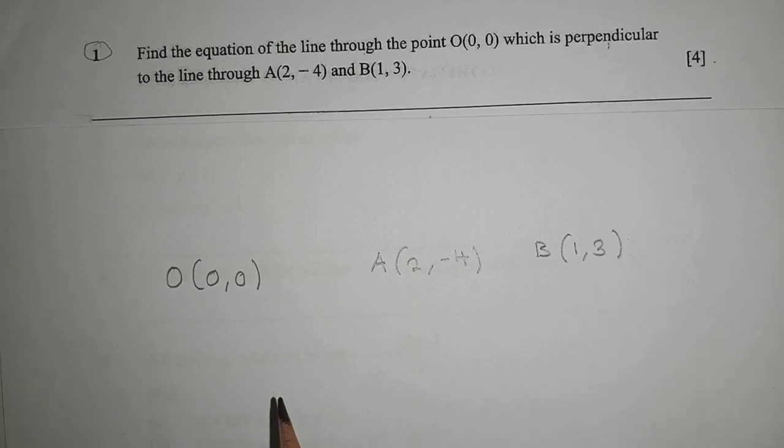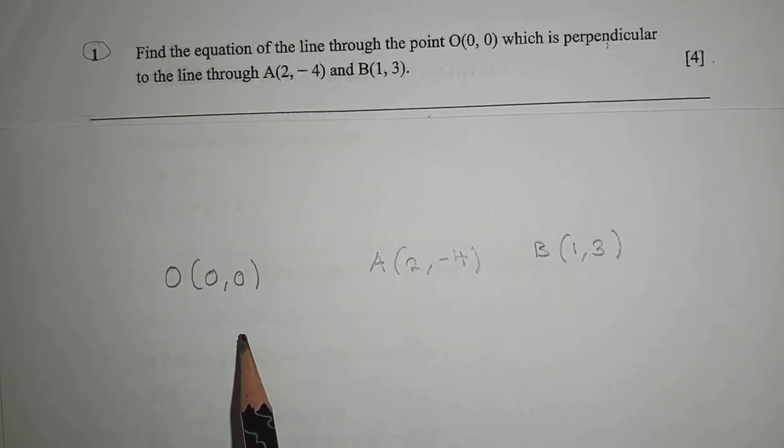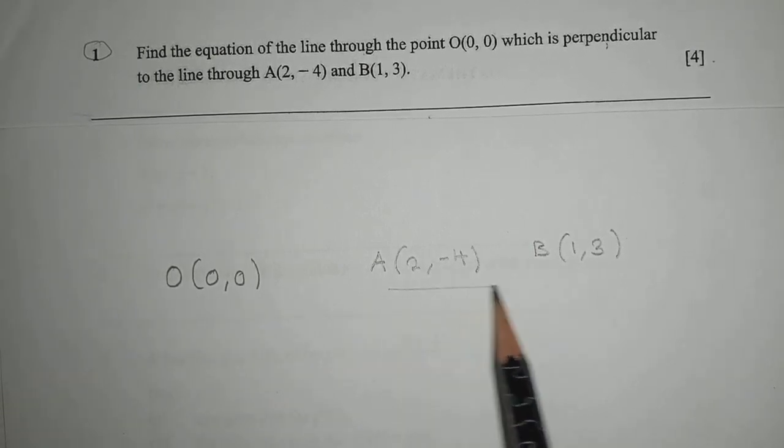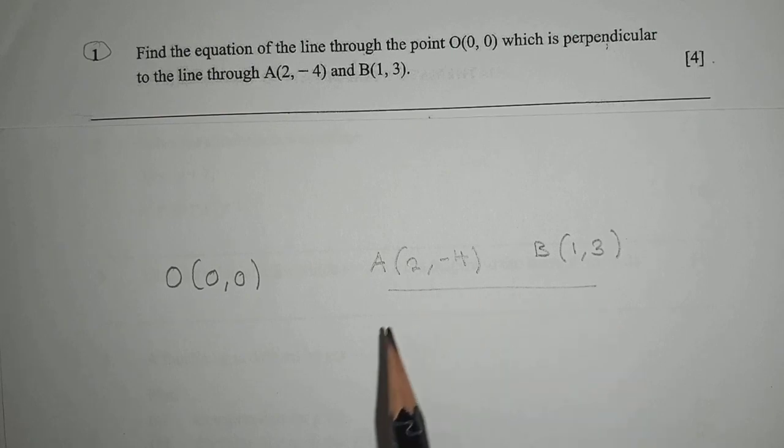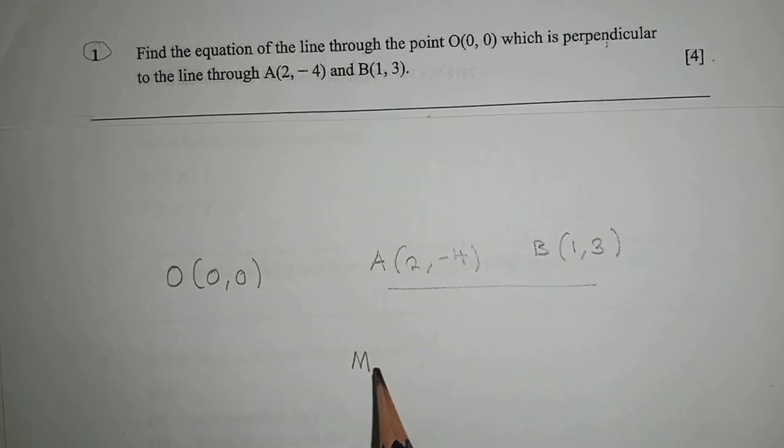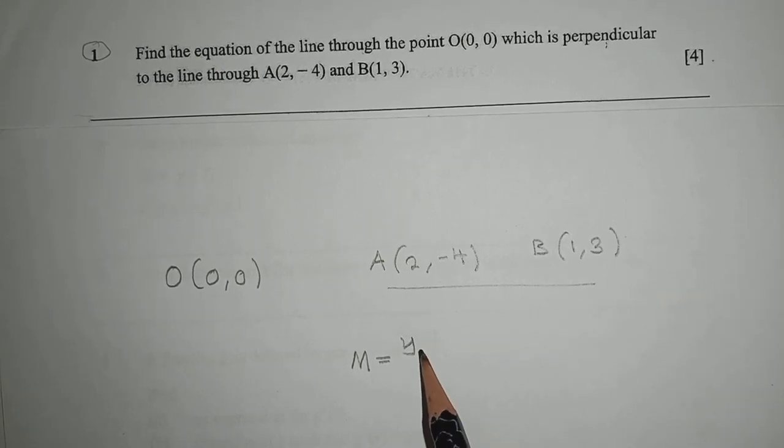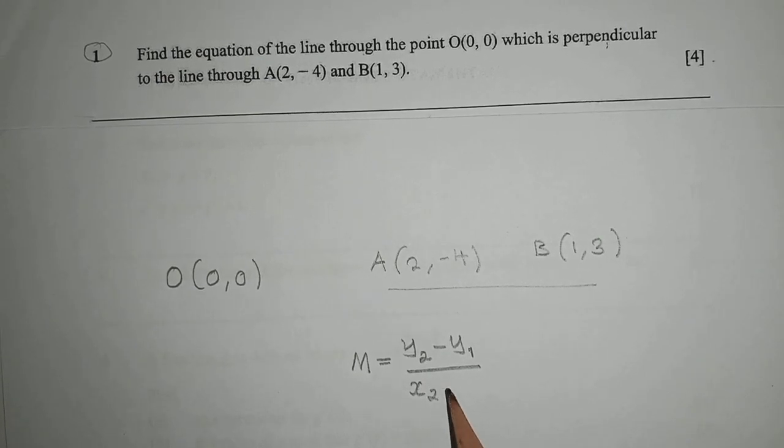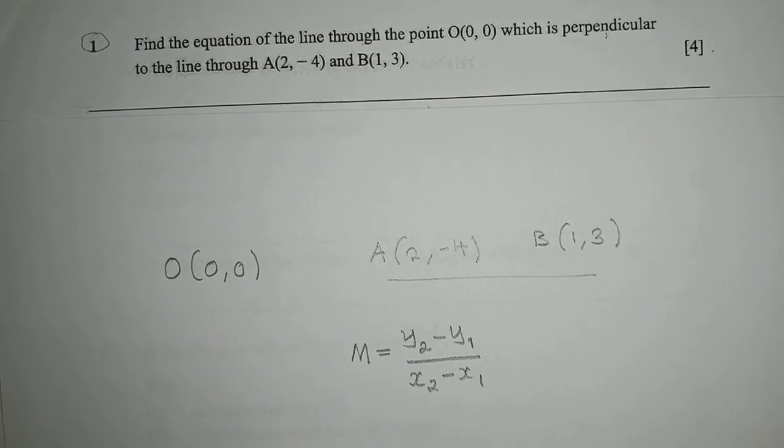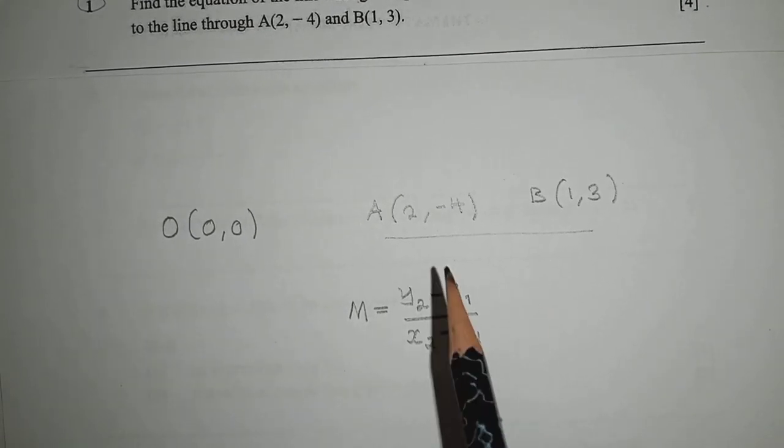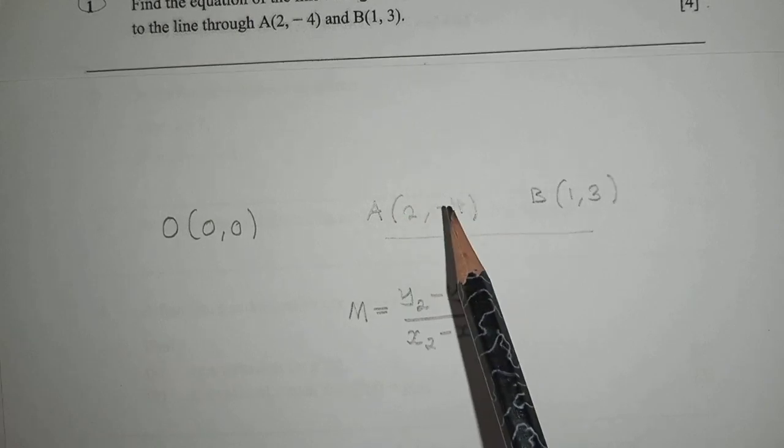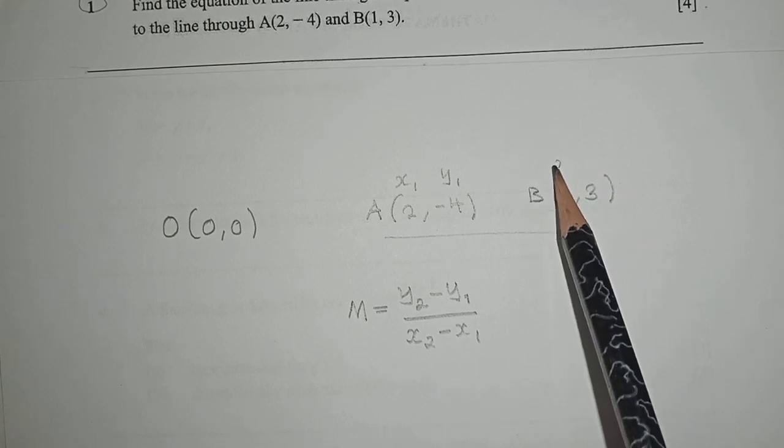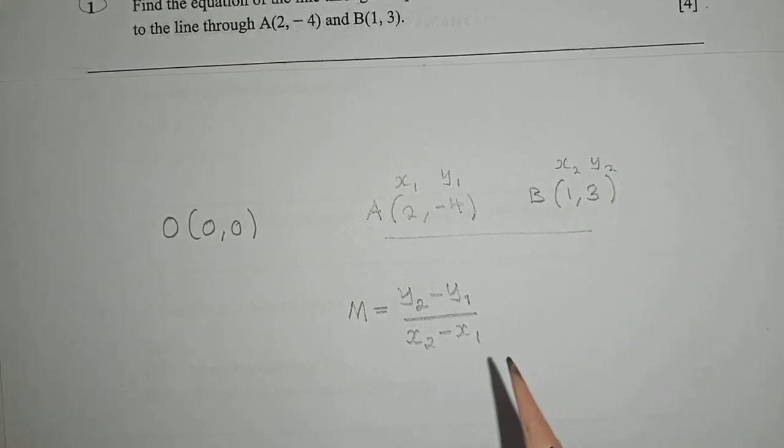To solve this, we need to understand coordinate geometry. The first thing is to find the equation of the line joining the two points. We use the formula m equals y subscript 2 minus y subscript 1 over x subscript 2 minus x subscript 1.